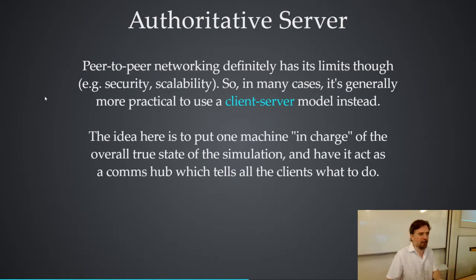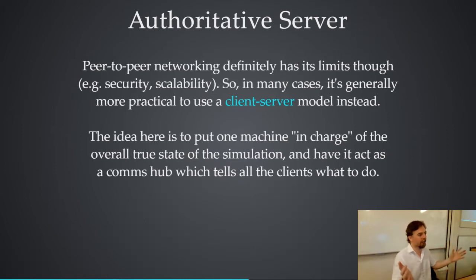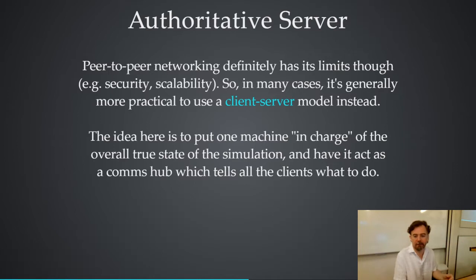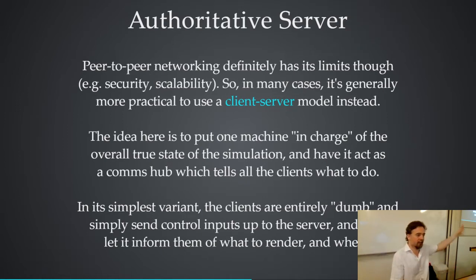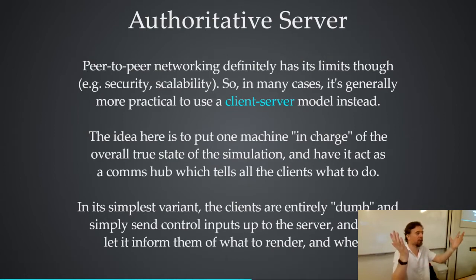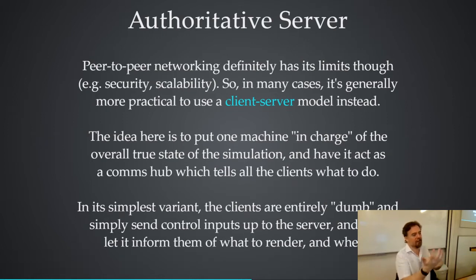With one machine in charge, the question about divergence kind of goes away. There's no ambiguity about who won — whoever the server says won. You can get agreement that way. In the simplest version, clients can be entirely dumb: all the client does is send its key presses up to the server, the server computes all the game logic for everyone, and just sends back positions and similar information, so the clients just render the world.